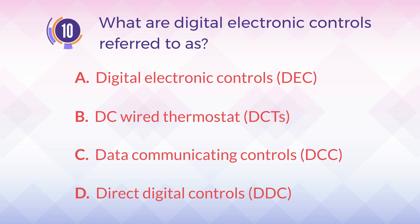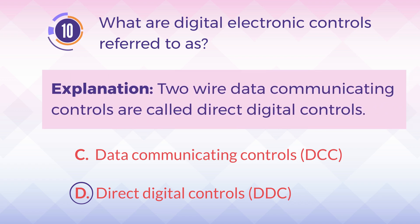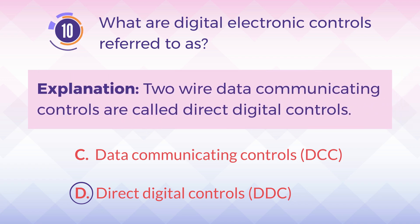The answer is D. Direct digital controls, DDC. Explanation: Two-wire data communicating controls are called direct digital controls.